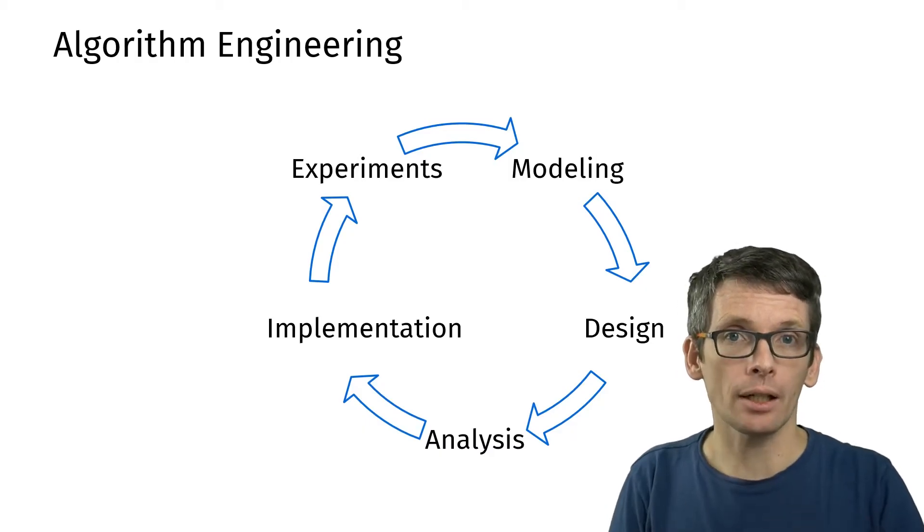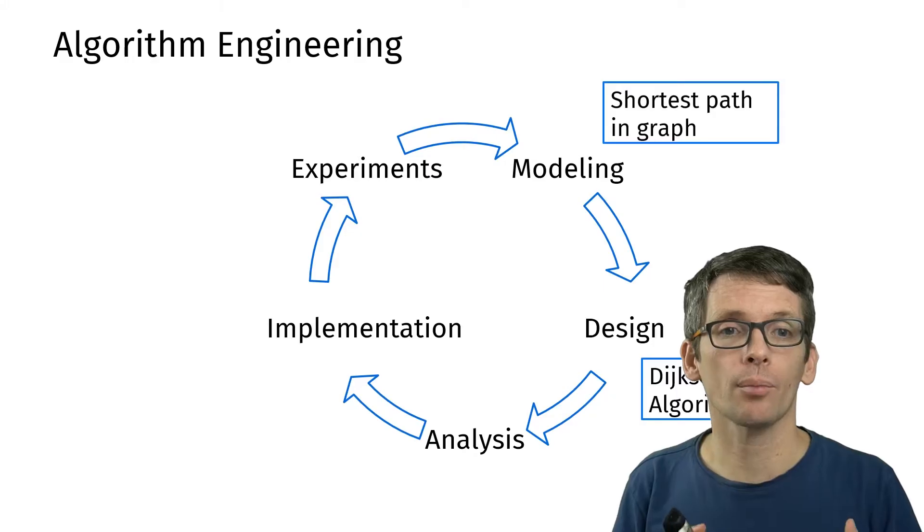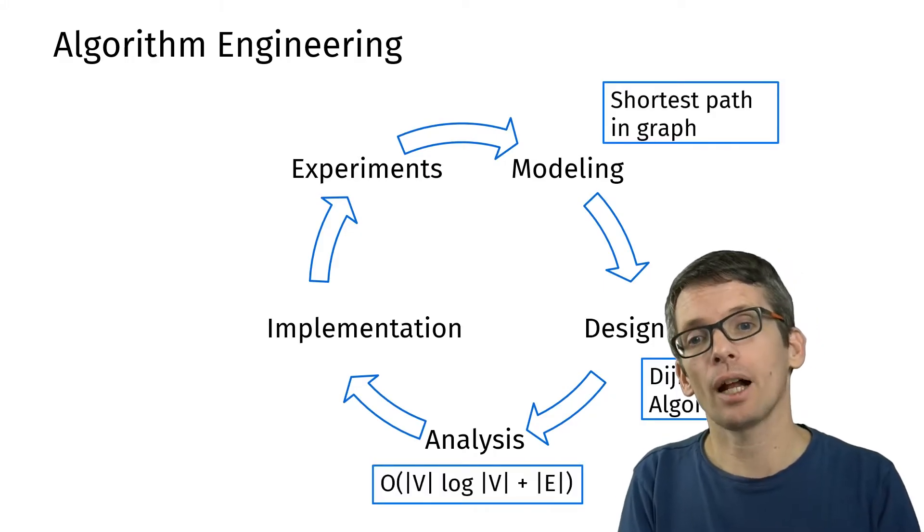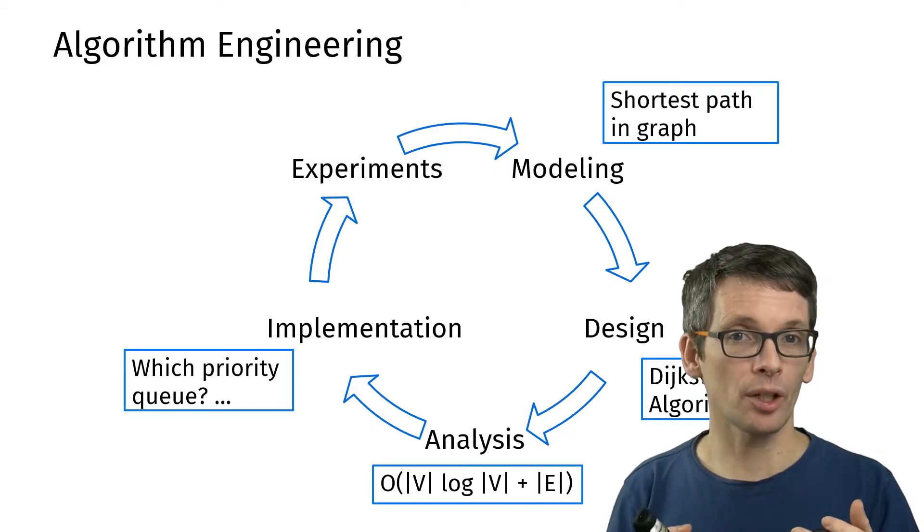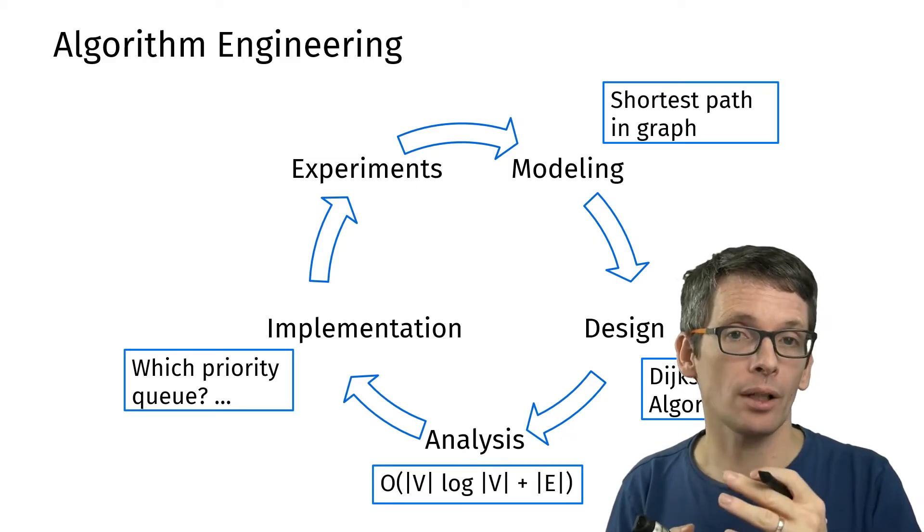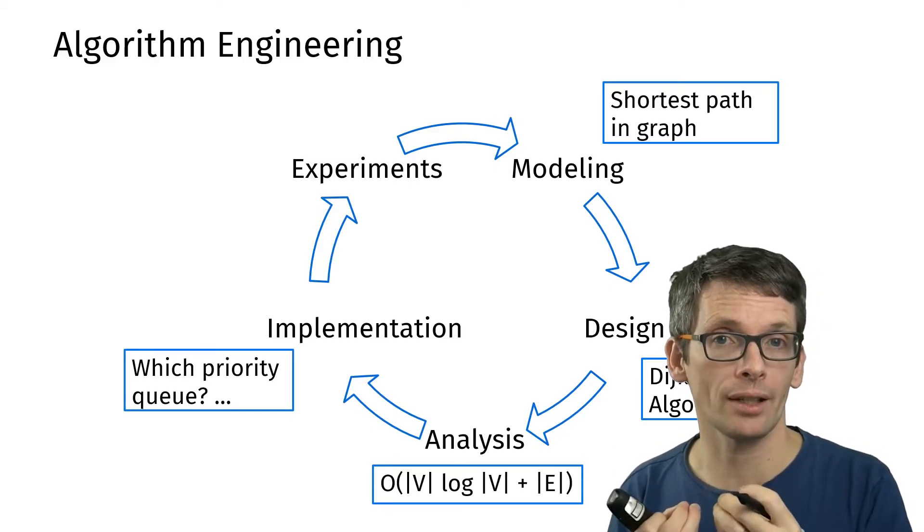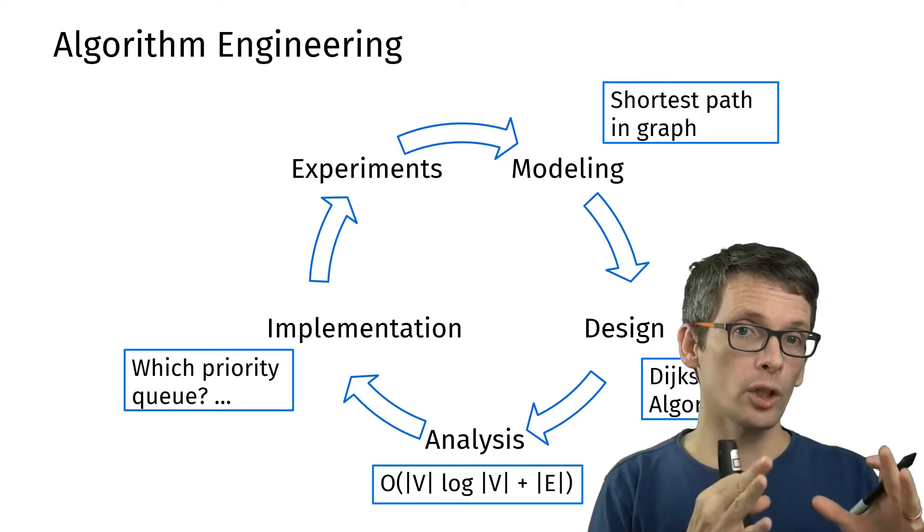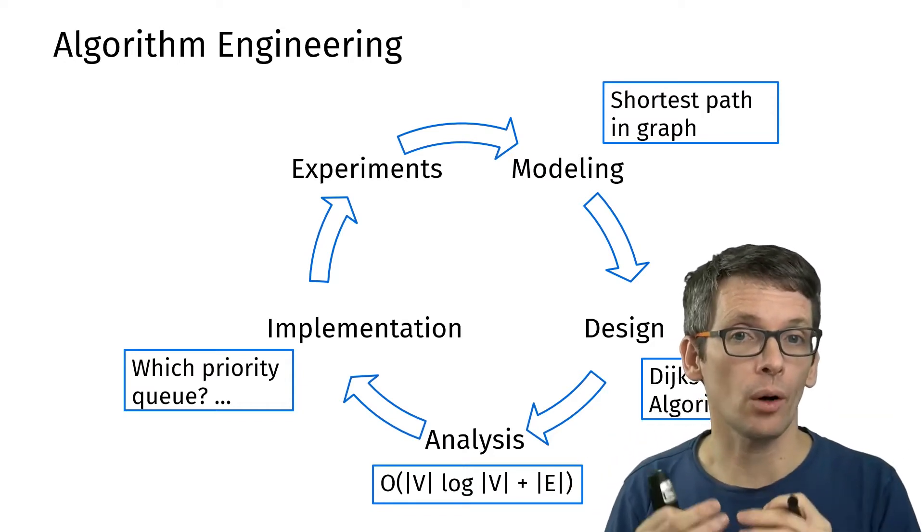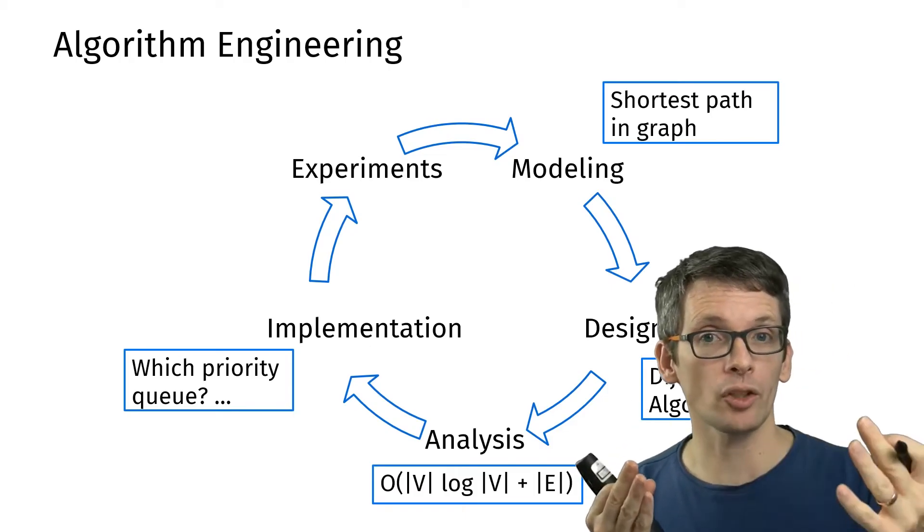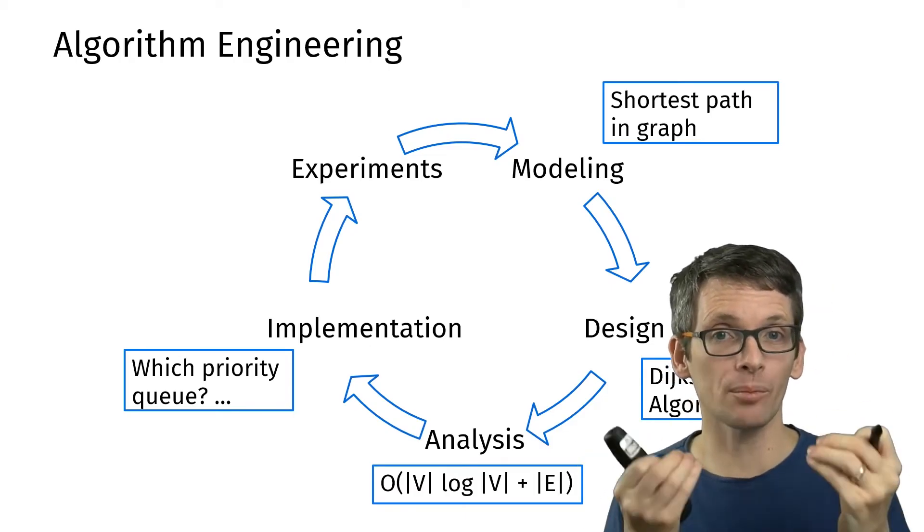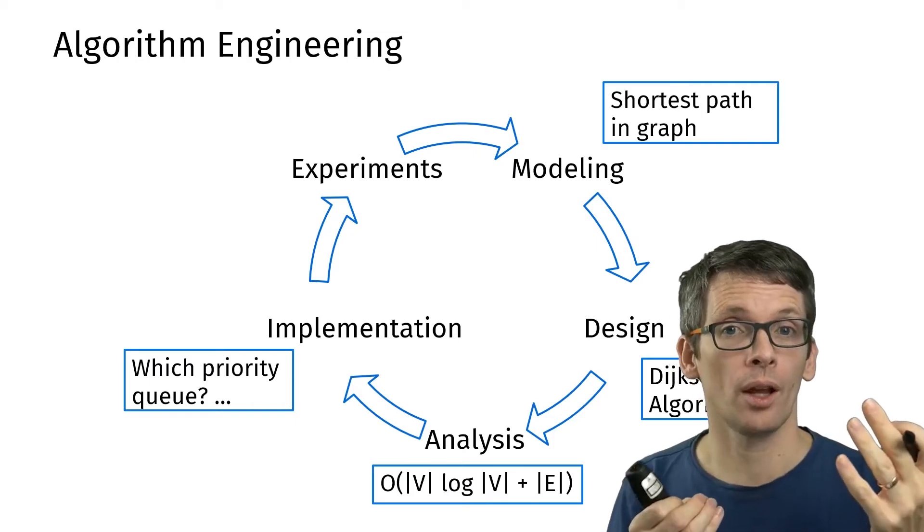We started with the shortest path problem, saw Dijkstra's algorithm, analyzed it, and now we come to implementation. Already for Dijkstra's algorithm there are very interesting questions to answer. For instance, which data structure do we want to use for our priority queue? We've seen min heaps, we talked about Fibonacci heaps, but if you want a practical implementation you probably don't want to use Fibonacci heaps. You could use min heaps, but there are also alternatives that might be faster.